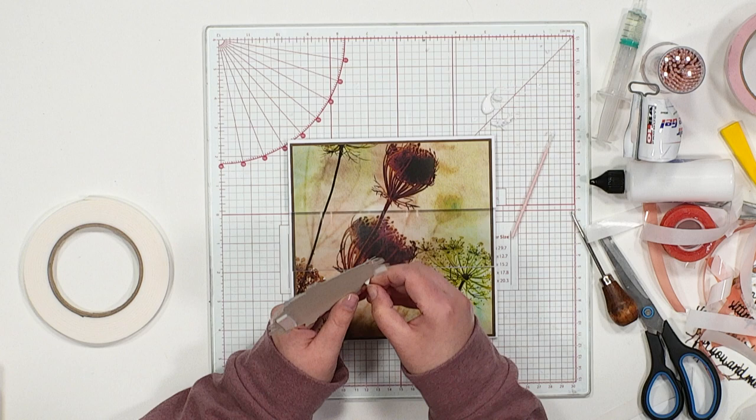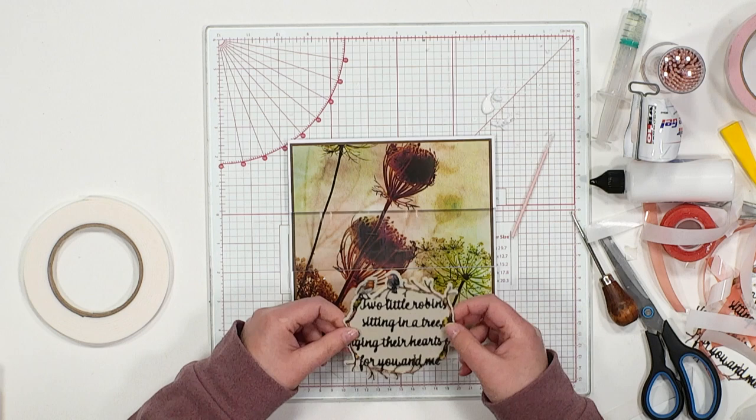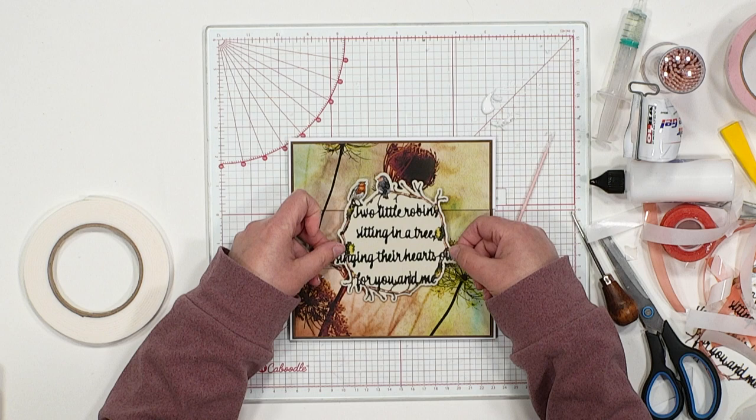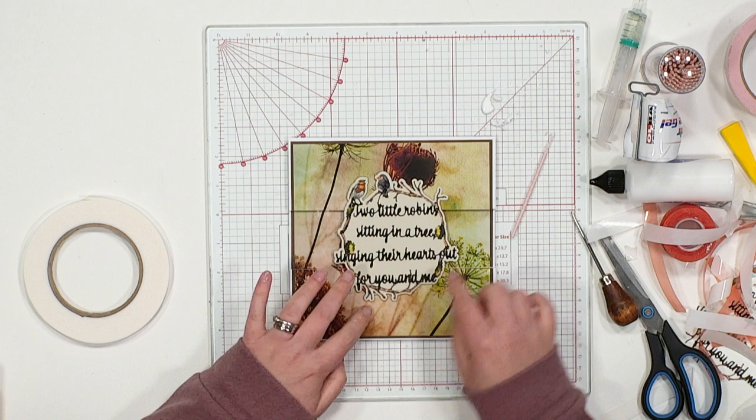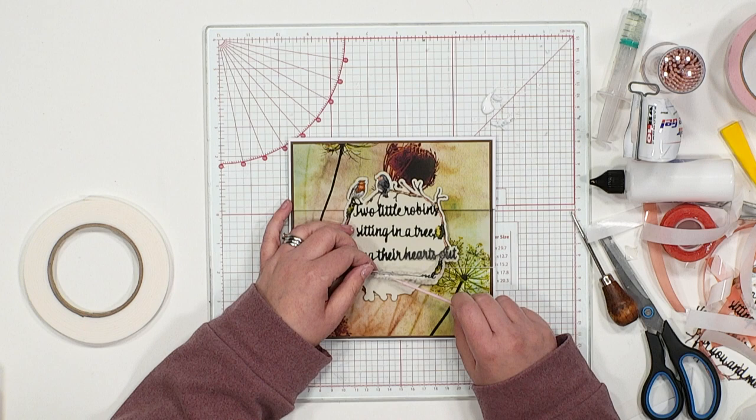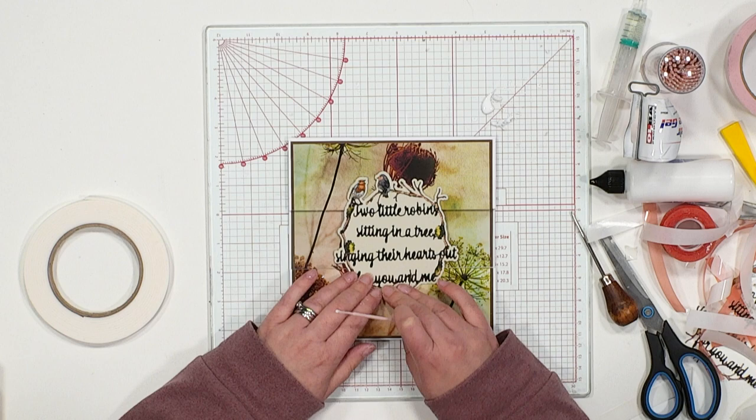Come on little tape. There we go. And then aligning that center again using your mat as a guide. Anywhere where it is lifting slightly we can go in. Just a little bit more glue, just using that glue applicator to stick that into place.